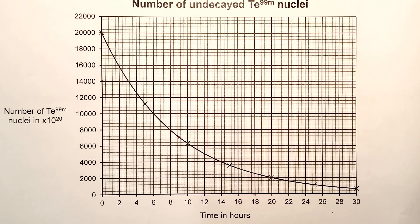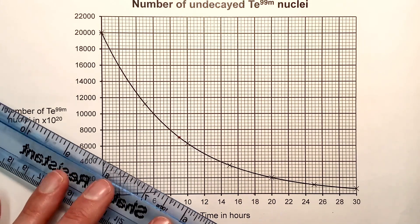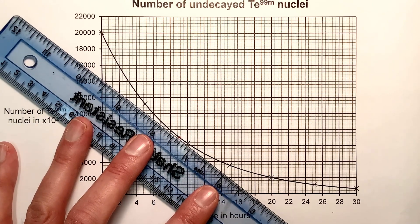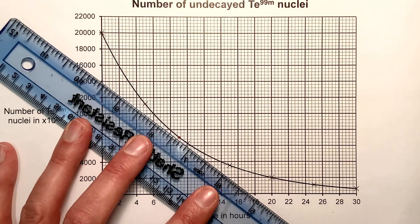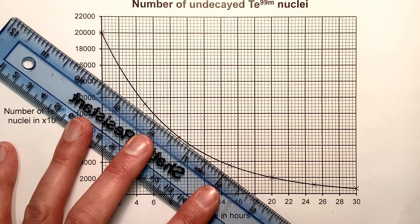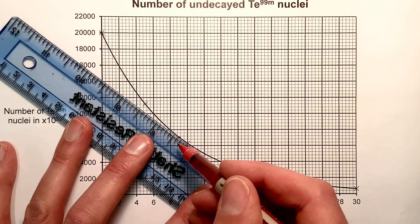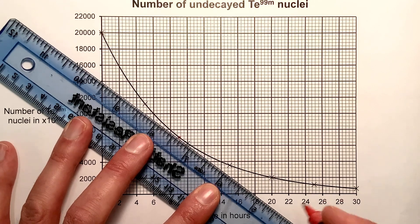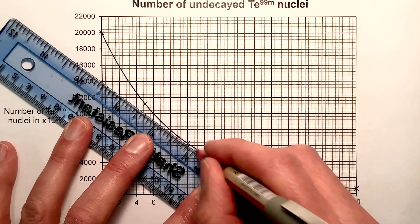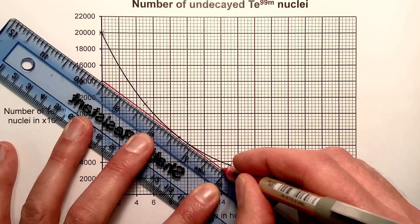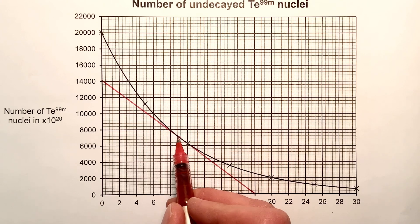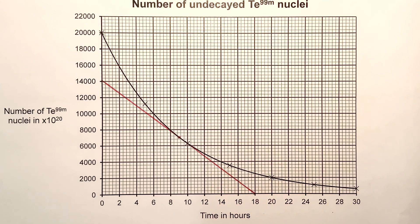Then we need to draw a tangent to the curve at that point, which means we put our ruler onto the graph paper so that it is just touching the line at that point. When we've got that lined up nicely, we're ready to draw the line, which hopefully you agree is touching just at this point, or goes over the line a little bit, but is centered around that point.